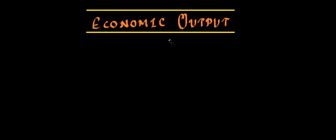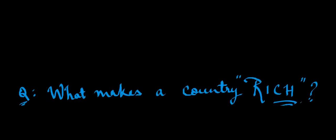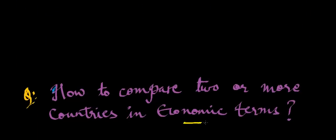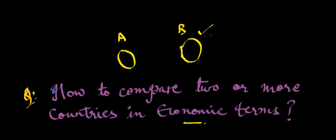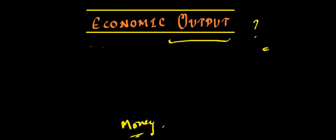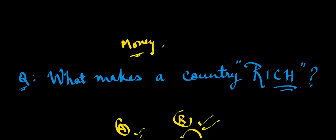Hi friends. In this video we are going to discuss about economic output. But why are we considering this word 'output' — we haven't even heard of it much in economics. Let me ask you a question: what makes a country rich? Is it money kept in the bank of the government or the people? And how do we compare two or more countries in economic terms — which country is better, A or B, and by what criteria? The answer to both these questions is economic output. Economic output is that particular thing which makes countries comparable and which makes a country rich or poor.